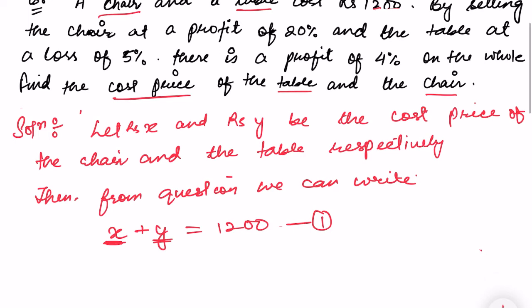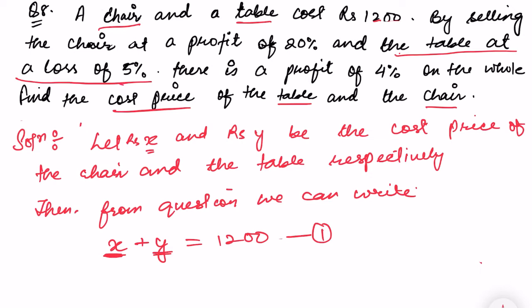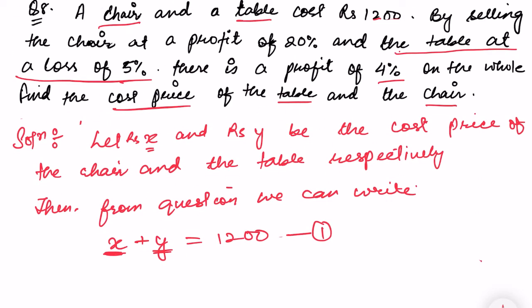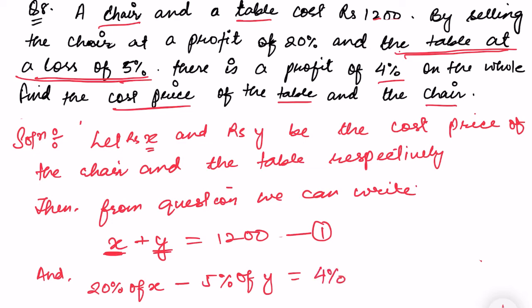The second condition: by selling the chair at a profit of 20% and the table at a loss of 5%, there is an overall profit of 4% on both. So, 20% of X minus 5% of Y equals 4% of 1200. Since the table is sold at a loss, we subtract that term.